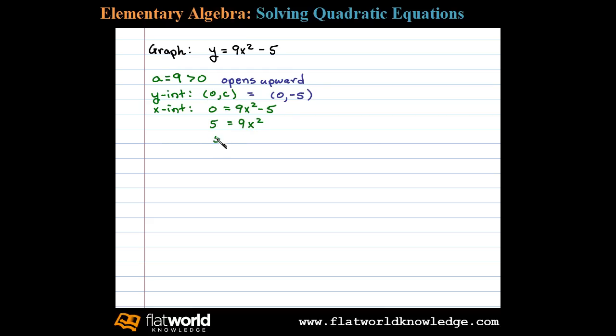Dividing both sides by 9 we have 5 ninths equals x squared. Now we can apply the square root property and write this is equivalent to plus or minus the square root of 5 over 9 and that'll equal x. Simplifying we have plus or minus the square root of 5 over 3 equals x. Notice we get two solutions for x.